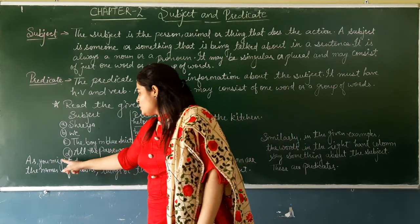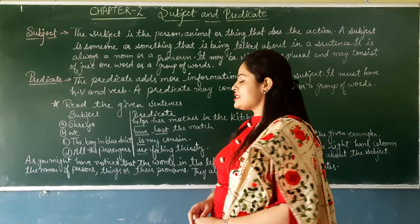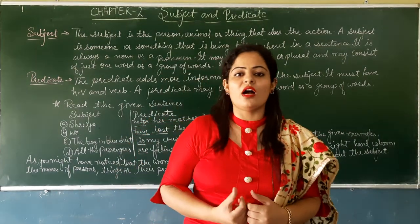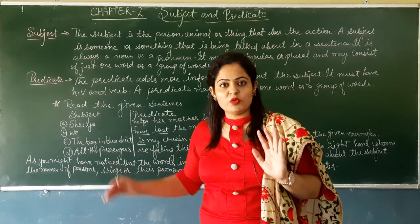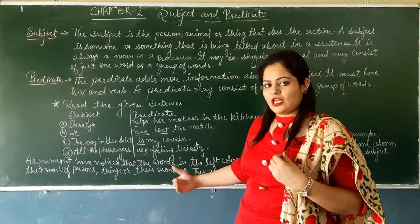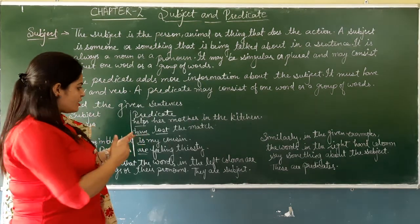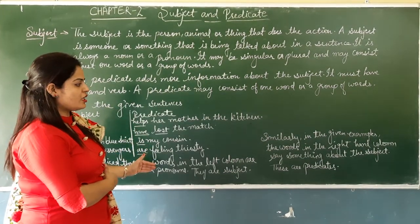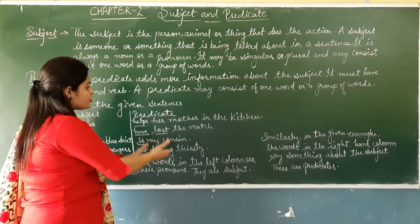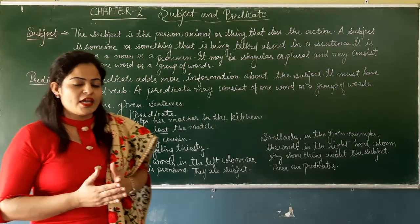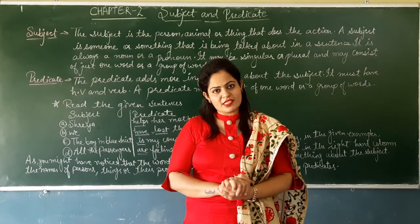As you might have noticed, the words in the left column are the names of persons, things, or their pronouns — they are the subjects. Aapne notice kiya hoga ki jo left wala column hai, usme ya to sangyya hai ya sarvanaam — noun hai ya pronoun hai — aur yeh subject hai. Similarly, in the given examples, the words in the right-hand column say something about the subject — these are predicates. Yeh subject ke baare mein batate hain, to yeh kya hain — predicate. I hope aapko yeh chapter samajh aaya hoga. Isse related aapki book mein exercise di hui hai, aapko woh karni hai.